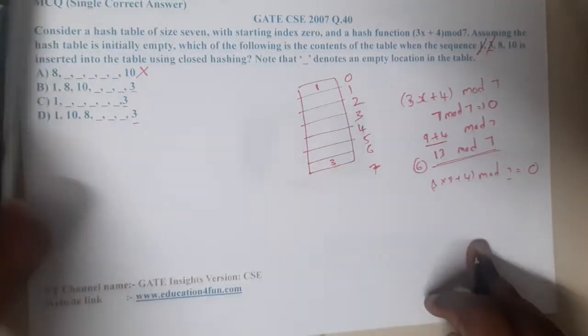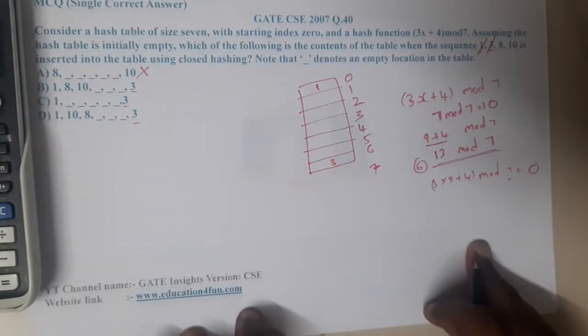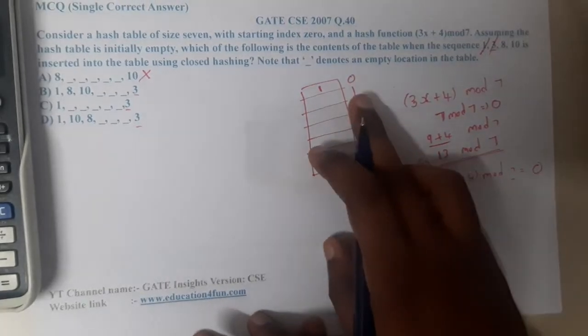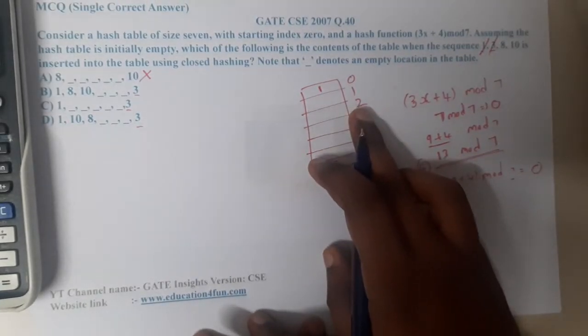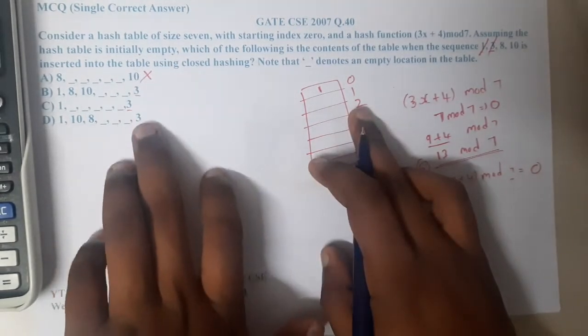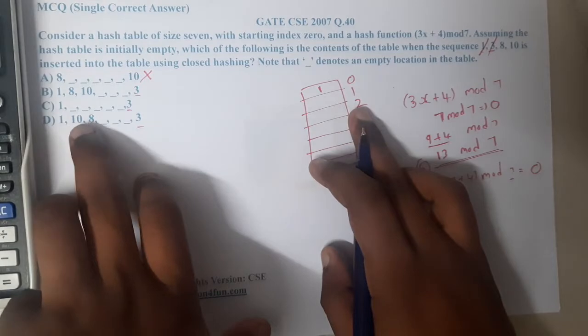Now we got a clash. Did they inform about linear probing or any method? I think they did not inform. Let us check the options. In options, each element has a different slot, hence 8 will come here.